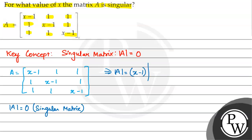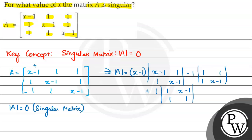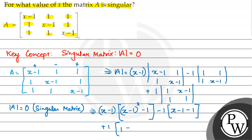So expanding along the first row, first column: x minus 1 multiplied by [(x minus 1)(x minus 1) minus 1] minus 1 multiplied by [1(x minus 1) minus 1] plus 1 multiplied by [1 minus (x minus 1)(1)].